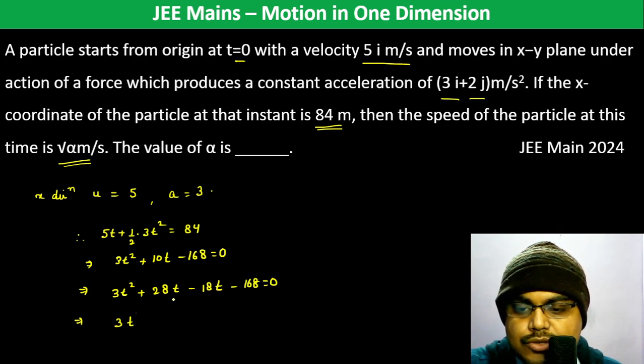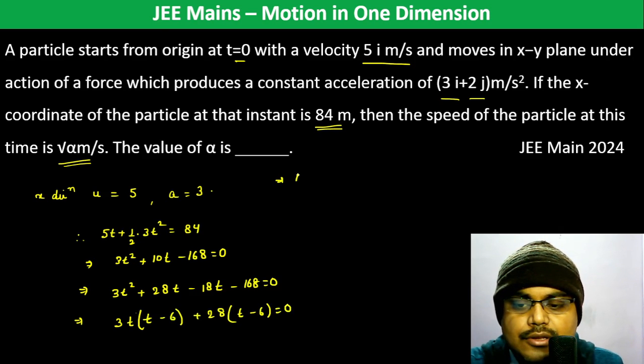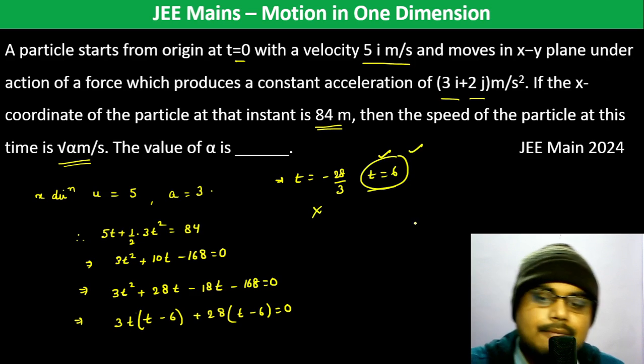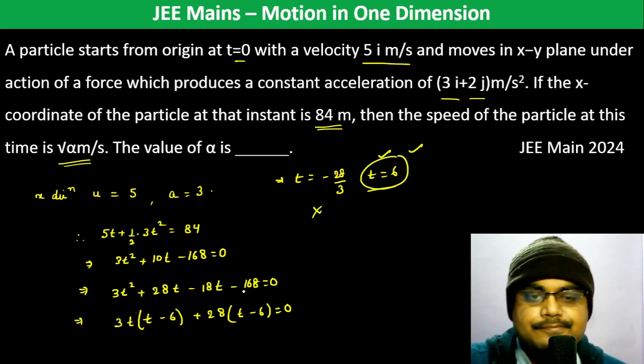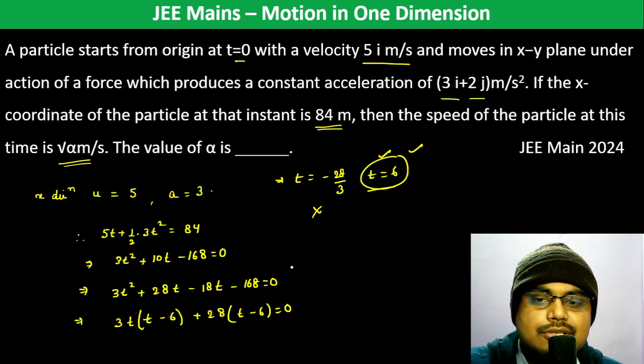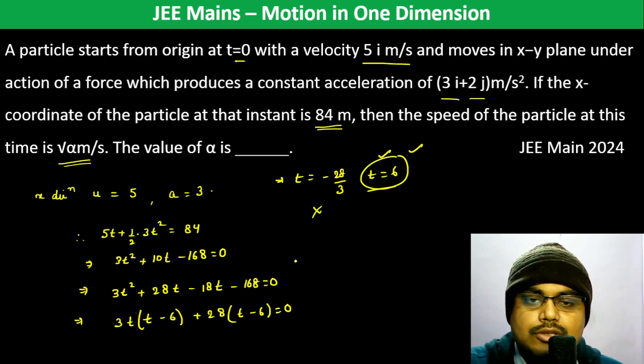Factoring: 3t(t-6) + 28(t-6) = 0, giving (3t+28)(t-6) = 0. So t = -28/3 or t = 6. Neglecting the negative value, t = 6 seconds is the time.